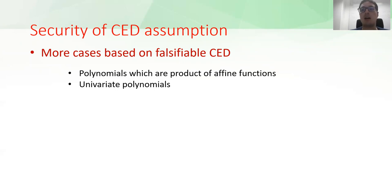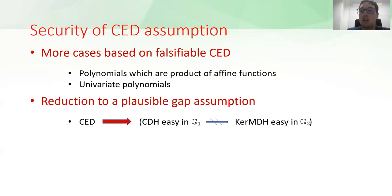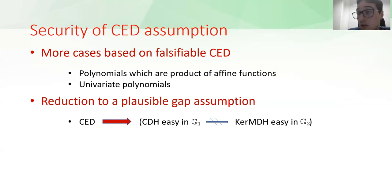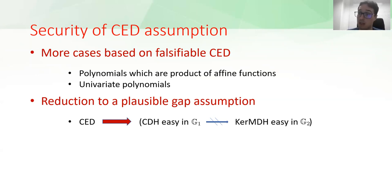Those cases are always based on falsifiable CAD. Another case is when the algebraic set itself has only a polynomial number of elements—for instance, the case of univariate polynomials. So univariate algebraic sets generated by univariate polynomials are sound under falsifiable CAD, and our NIZKs for those sets are sound under falsifiable CAD. In the general case where CAD is non-falsifiable, we were able to reduce it to a single plausible gap assumption: if CDH is easy in group 1, it doesn't mean that KMDH is also easy in group 2. This is a very plausible assumption in type 3 pairings.